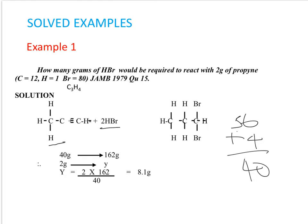For hydrogen bromide, the atomic mass of bromine is 80 and that of hydrogen is 1. So hydrogen bromide is 80 plus 1 equals 81. Since 2 moles of hydrogen bromide reacted, we have 2 times 81, which is 162. So 40g of propyne requires 162g of hydrogen bromide.